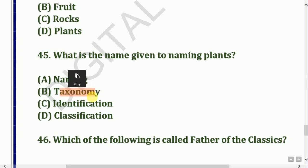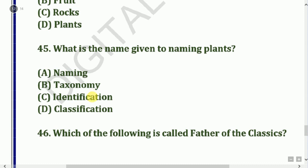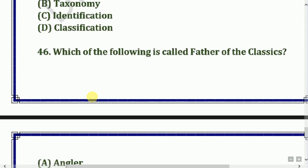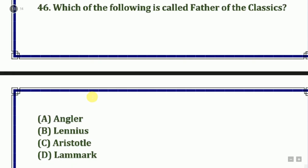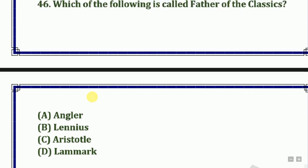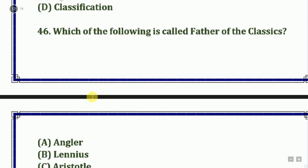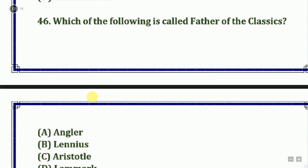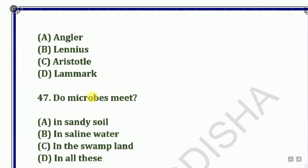Next question: Which of the following is called the father of classification? Options: Angular, Linnaeus, or Lamarck. The answer is Linnaeus.